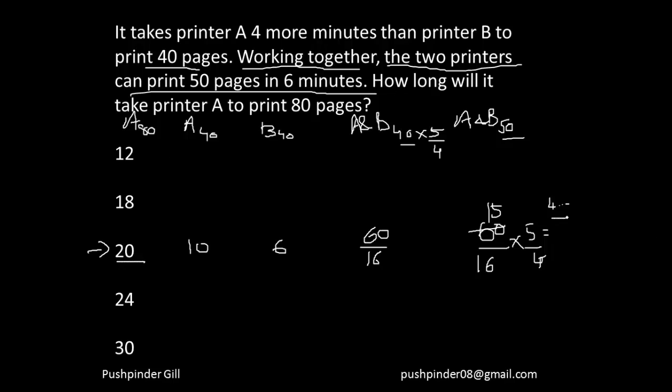If 20 is not able to give you 6 minutes, how will 18 give you 6 minutes? How will 12 give you 6 minutes? My next step should be to try these options rather than these options because if 20 itself is not sufficing, you can see there is a direct relationship here. If A can print 80 pages in 20 minutes and A and B together can print 50 pages in 4 minutes, I should be getting 6 here. That means there should be a number greater than 20 here.